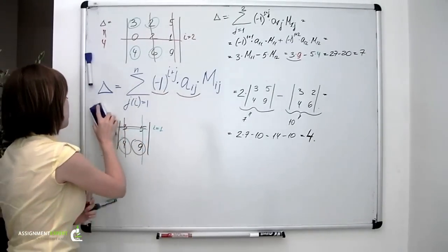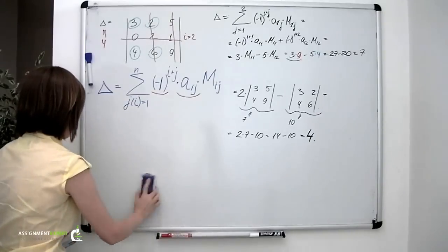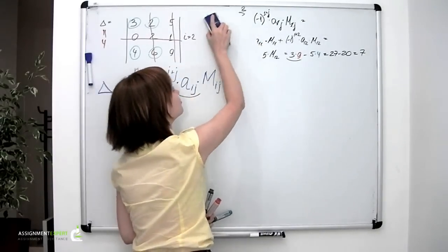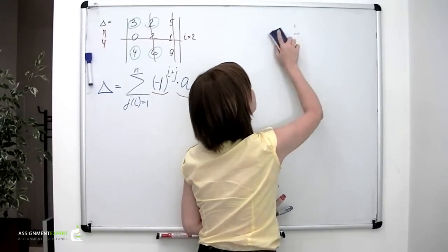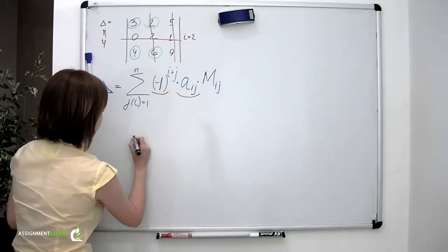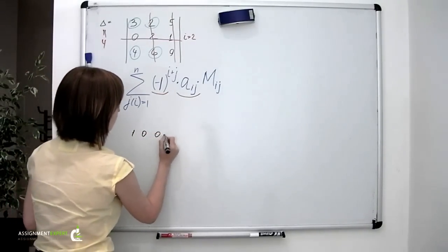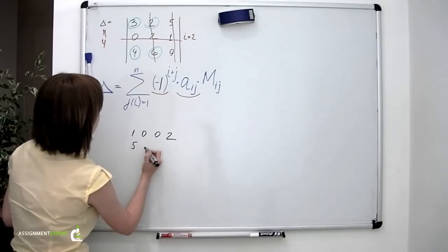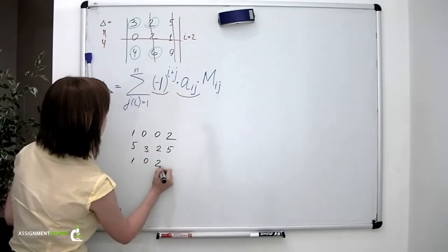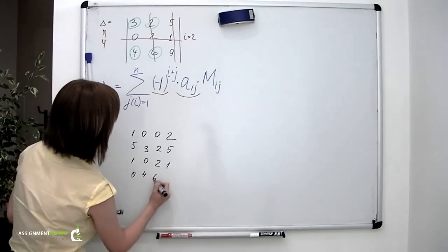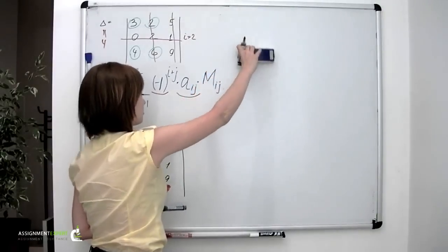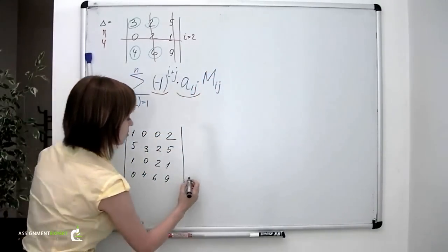And now a little challenge. Let's calculate a determinant of the size 4 by 4. Like this: 5, 3, 2, 5, 1, 0, 2, 1, 0, 4, 6, 9. This is a new determinant. It's of the size 4 by 4, and we're about to calculate it.